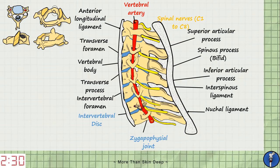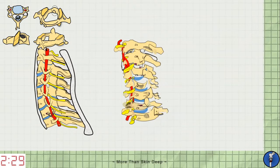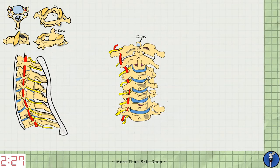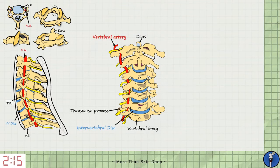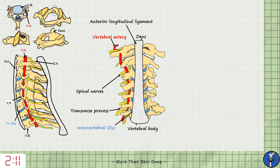This is an anterior view of the cervical vertebra. Here is the dens, a unique bony structure of the axis. To orient ourselves, here is the vertebral body, the intervertebral discs and the transverse processes, which house the vertebral artery in their transverse foramen. The spinal nerves exit via the intervertebral foramen, and also visible is the anterior longitudinal ligament.